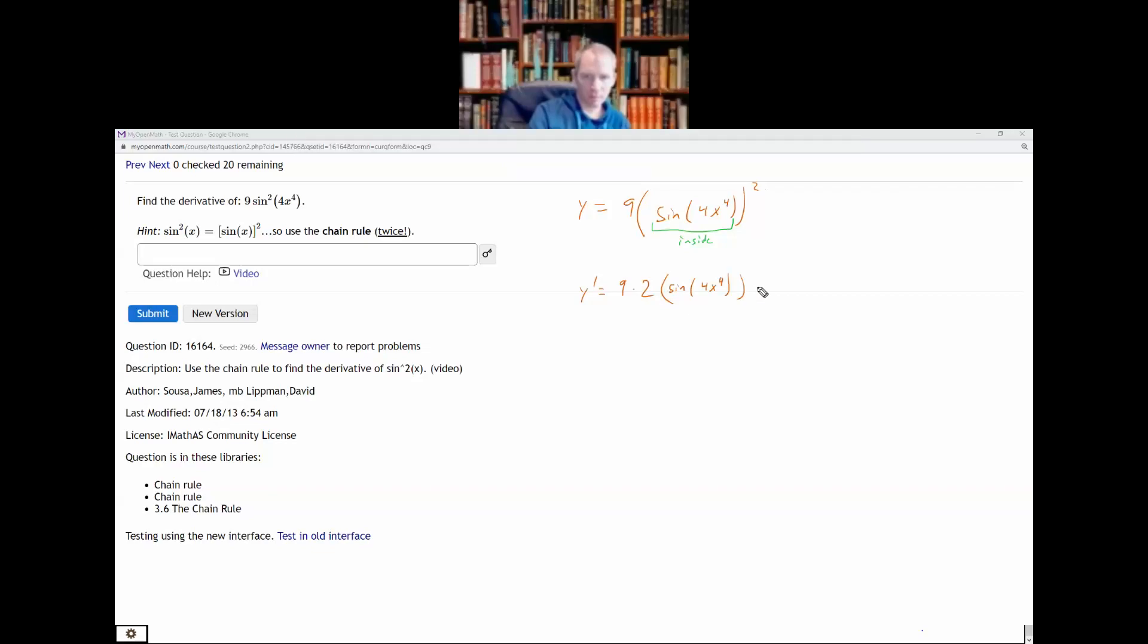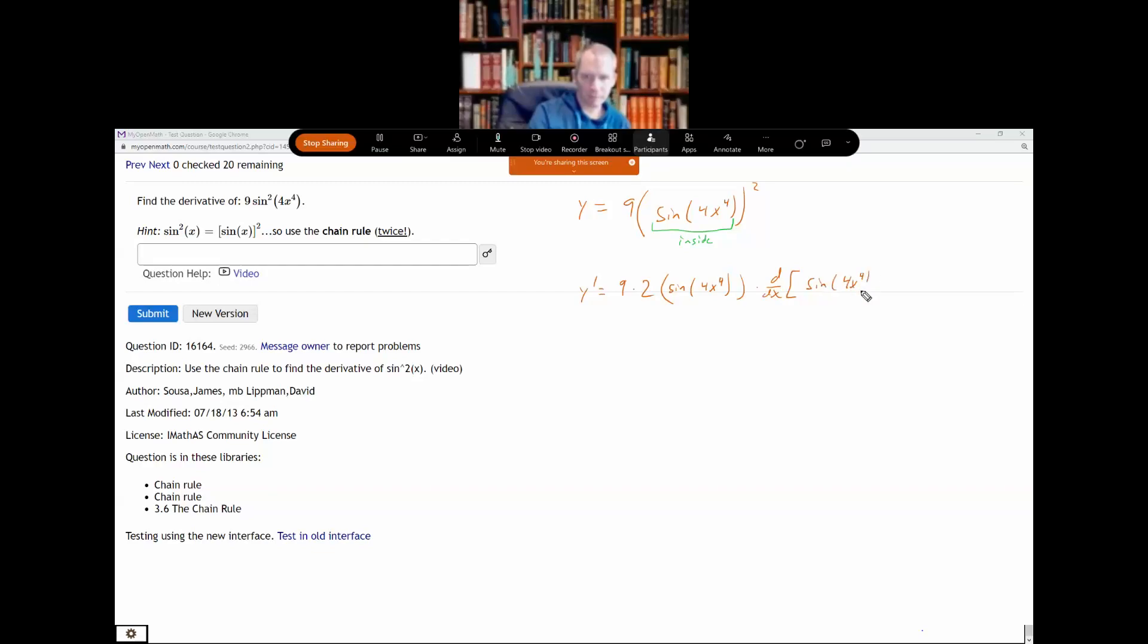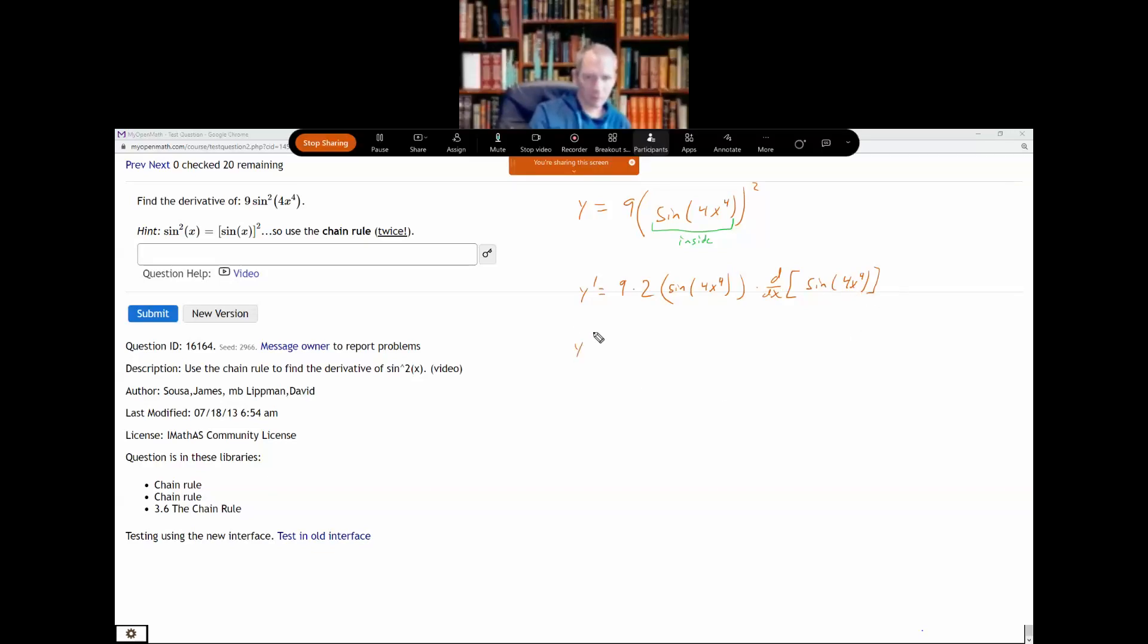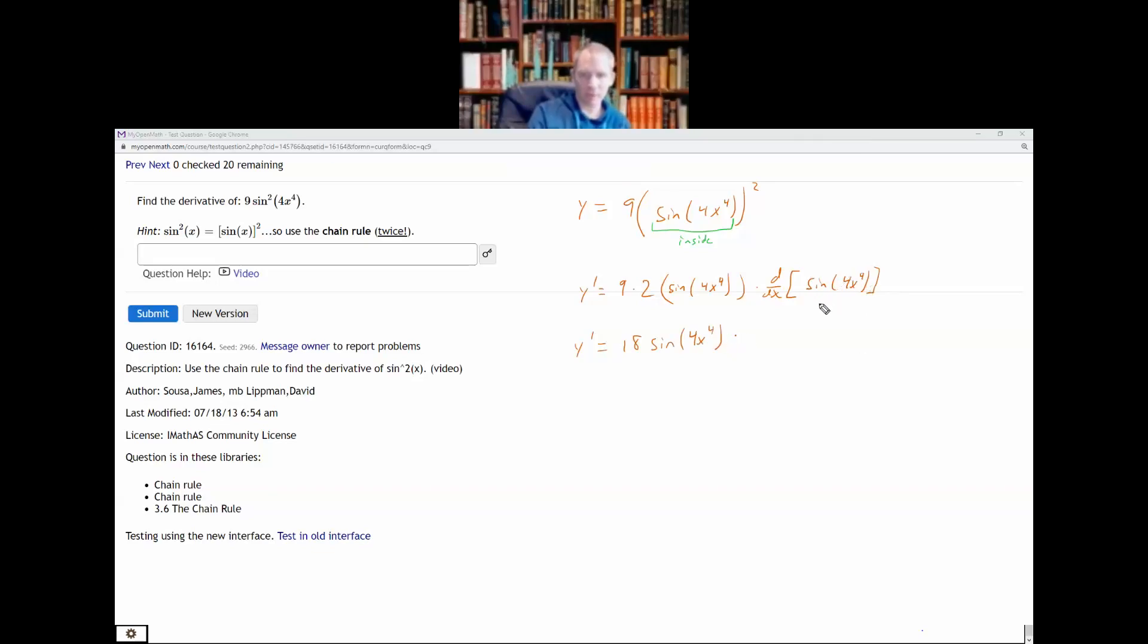So 9 times 2 is 18, so I have 18 sine of 4x to the fourth times whatever happens over here. And over here when I differentiate sine of 4x to the fourth I would look at that and say, okay, the 4x to the fourth is inside the sine function so I'm using the chain rule again.